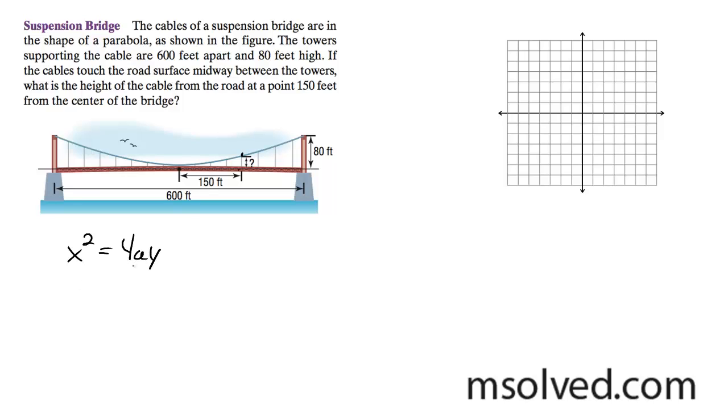What we need to do first is we need to find a, so we can find y at that point. To find a, we need to take an endpoint here, so that's going to be 300 squared is equal to 4 times y at that point, which is 80, times a. And a ends up being 900 over 320. Actually I take that back, 300 squared, I'll just write it as 300 squared. It's equal to 281.25.